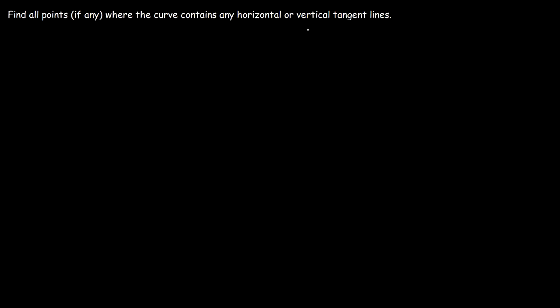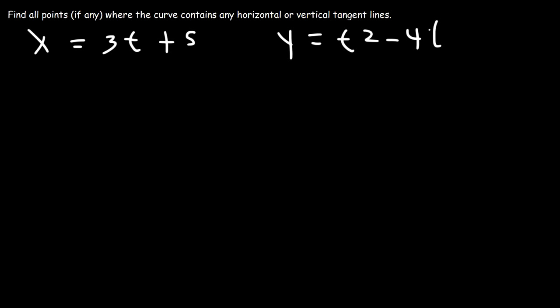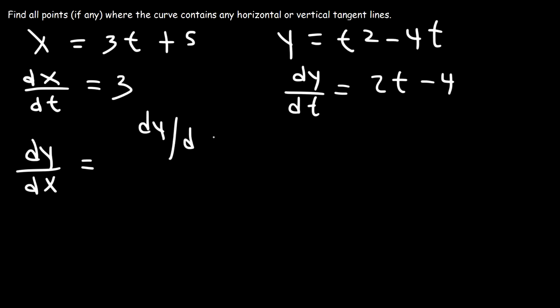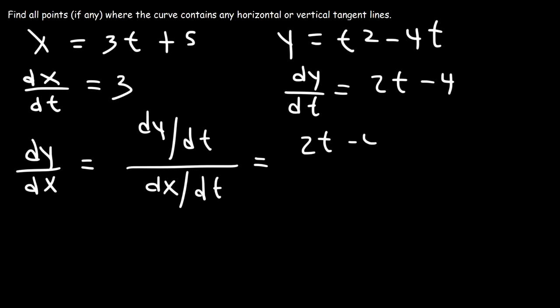Let's say we have a parametric function where x is equal to 3t plus 5, and y is equal to t squared minus 4t. To find the location of any horizontal or vertical tangency, let's find dy/dx first. We need dx/dt, which is the derivative of 3t plus 5, so that's 3. And dy/dt — the derivative of t squared minus 4t — is 2t minus 4. So dy/dx equals dy/dt divided by dx/dt, which is 2t minus 4 over 3.